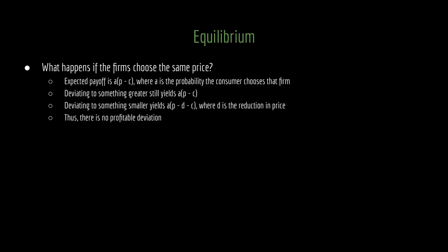Let's think about what happens if the firms choose the same price. The expected payoff to a firm is A times the quantity of P minus C, where A is the probability that the consumer is choosing that firm. Since the consumer is indifferent, they could go to one firm or the other, or randomize — maybe flip a coin. So A is that probability of sale. P minus C is the price of the good minus the cost of producing it — that's the profit per sale — multiplied by the probability the firm actually gets that profit.